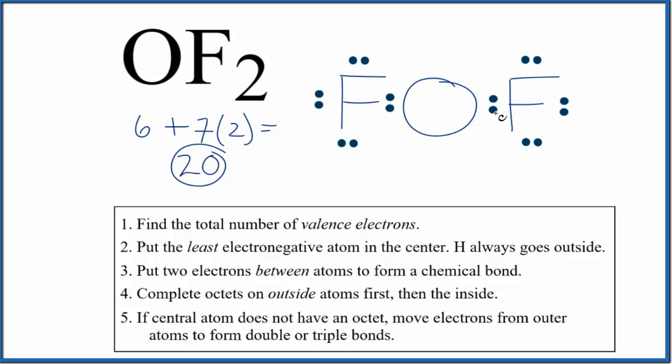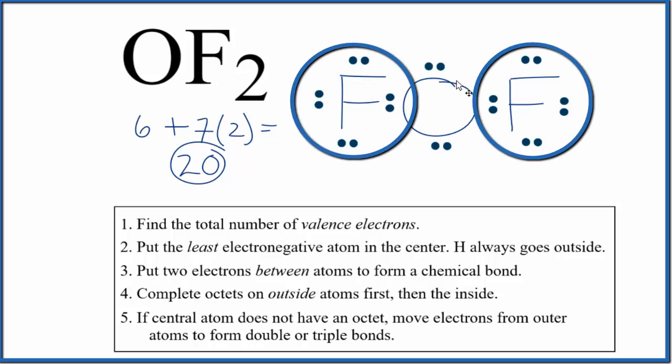But the oxygen only has two plus two, four valence electrons. We have 20 total valence electrons, so we have four more to place on the oxygen. Now the fluorines and oxygen both have octets, and we've used all 20 valence electrons.